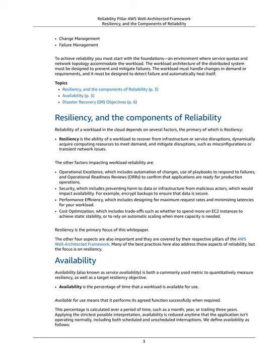Availability, also known as service availability, is both a commonly used metric to quantitatively measure resiliency, as well as a target resiliency objective. Availability is the percentage of time that a workload is available for use. Available for use means that it performs its agreed function successfully when required. This percentage is calculated over a period of time, such as a month, year, or trailing three years. Applying the strictest possible interpretation, availability is reduced any time that the application isn't operating normally, including both scheduled and unscheduled interruptions.